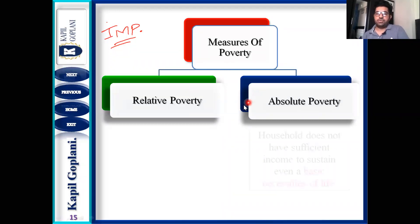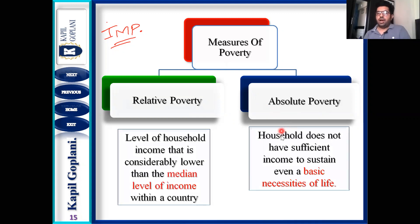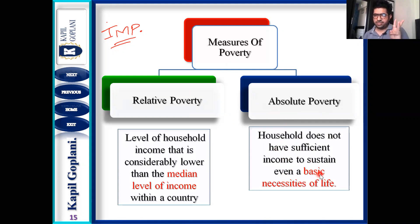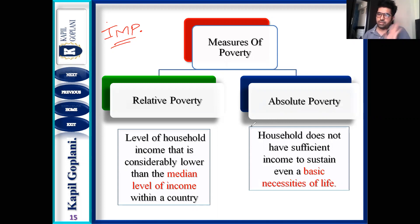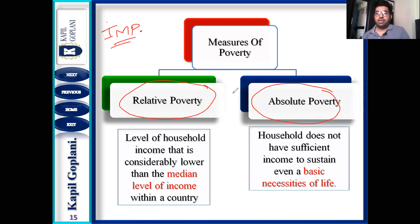Absolute poverty: a household does not have sufficient income to sustain even the basic necessities of life. The five basic necessities are food, clothing, shelter, education, and health. If you are not able to fulfill even one of these five basic necessities, you will be considered absolutely poor as per the definition of absolute poverty.